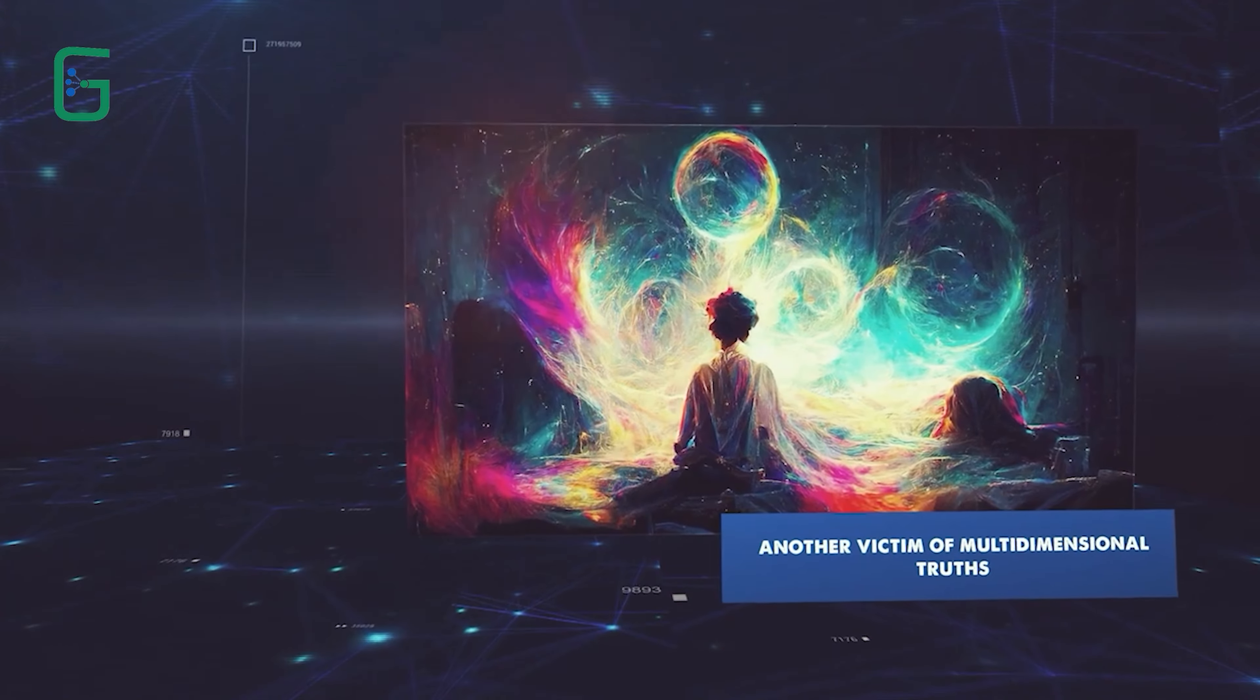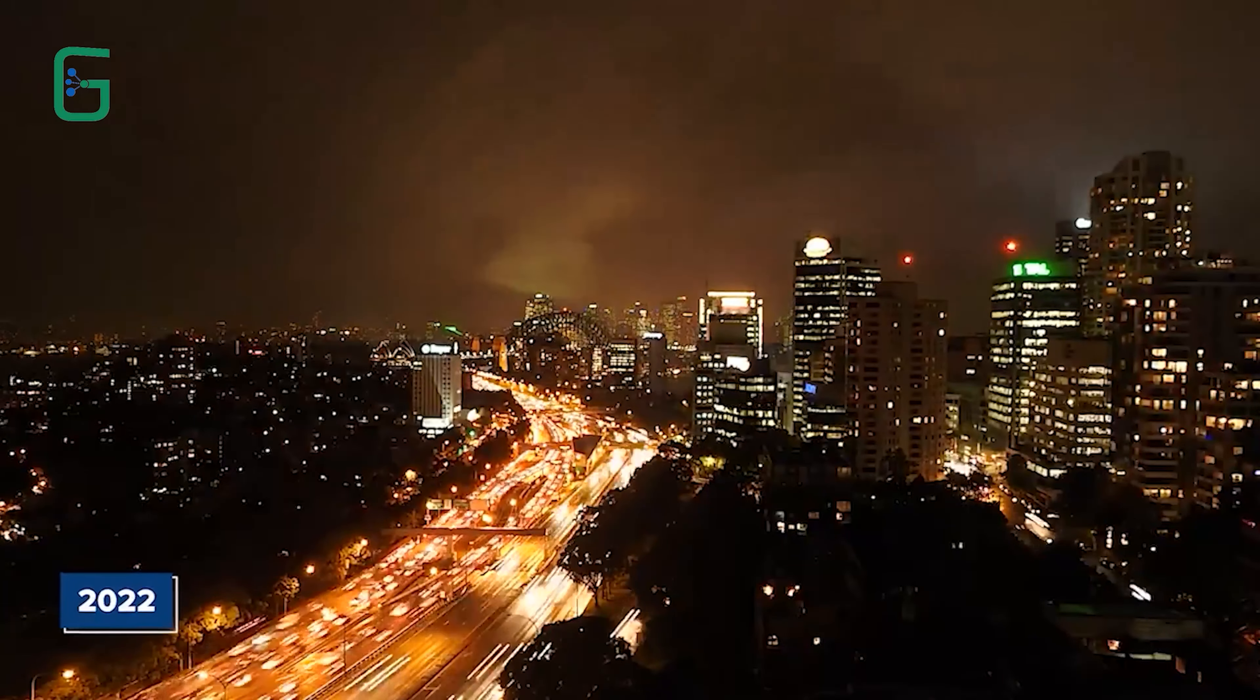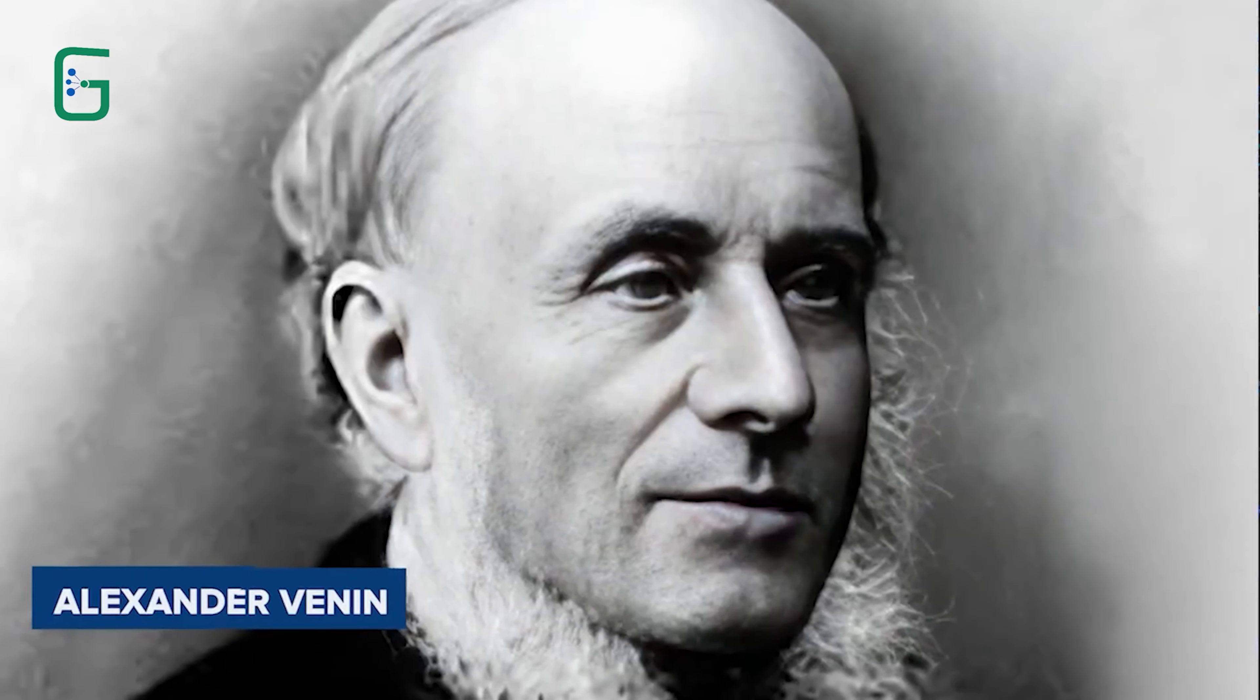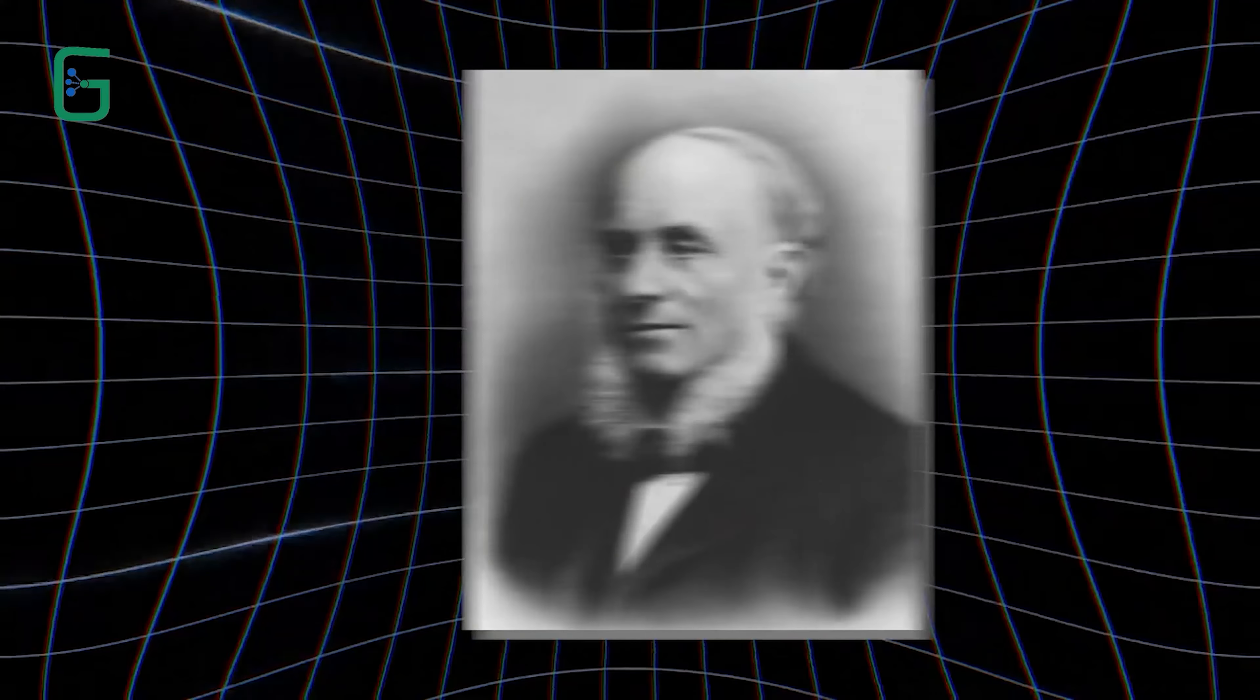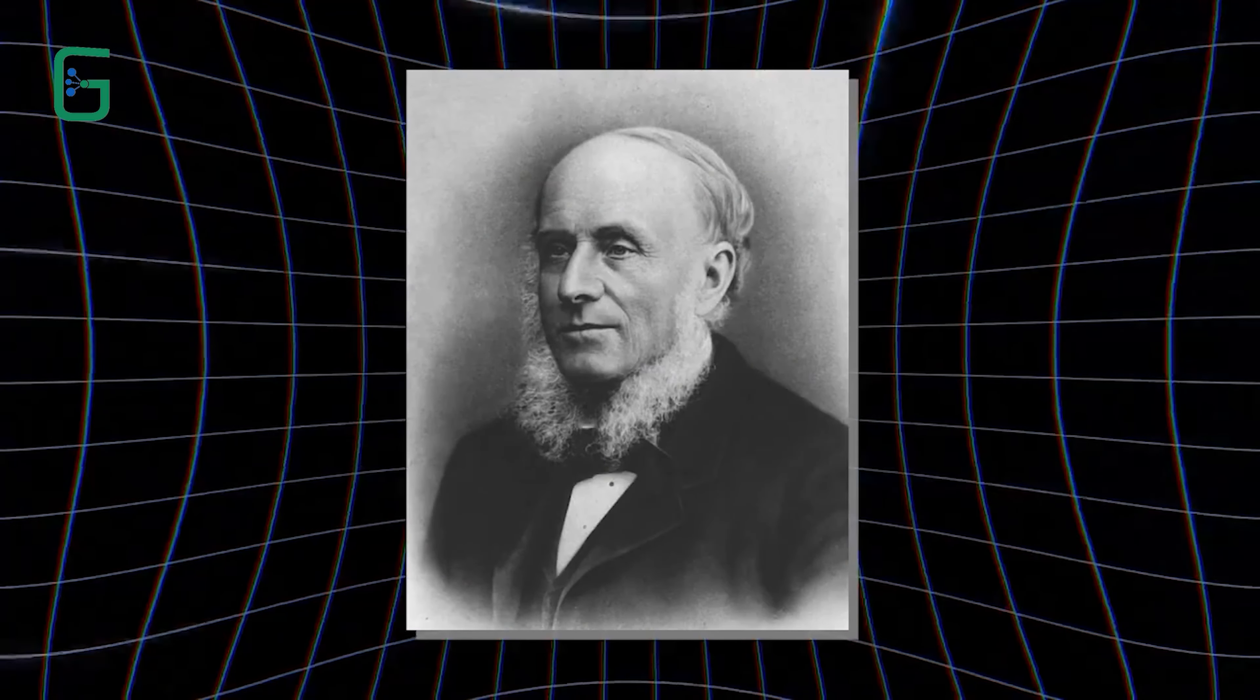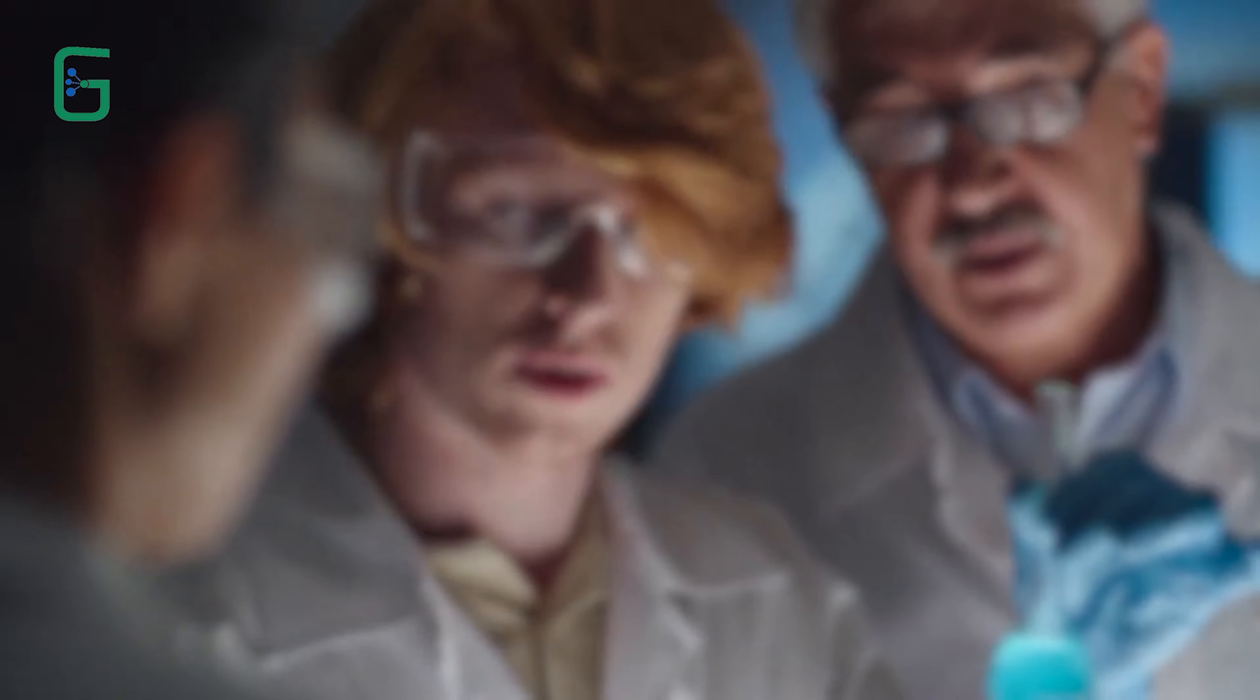Another victim of multidimensional truths. In the year 2022, Dr. Alexander Vennen, a scientist who studied space and time, suddenly disappeared from his lab in the Swiss Alps. He went missing just a few days after telling some of his fellow scientists that he had made a new invention that could help people see creatures from other dimensions.